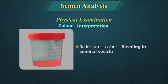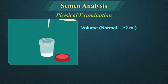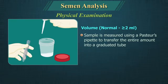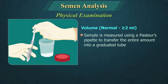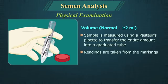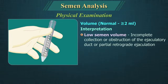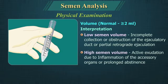Volume: The volume of the semen sample is measured using a Pasteur pipette to transfer the entire amount into a graduated tube, and readings are taken from the markings. Low semen volume may suggest incomplete collection, obstruction of ejaculatory ducts, or partial retrograde ejaculation. High volumes may be associated with active exudation due to inflammation of the accessory organs or prolonged abstinence.